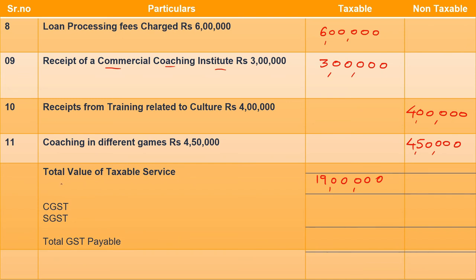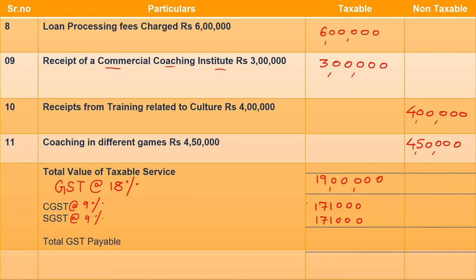After total value of taxable service, we need to calculate GST. The rate given in the question is 18%. For 18% GST: CGST will be at 9% and SGST will also be at 9%. So we calculate 9% of ₹19,00,000 — we get ₹1,71,000 as CGST and ₹1,71,000 as SGST. Adding both: ₹1,71,000 + ₹1,71,000 = ₹3,42,000, which is the total CGST and SGST — that will be called total GST payable.